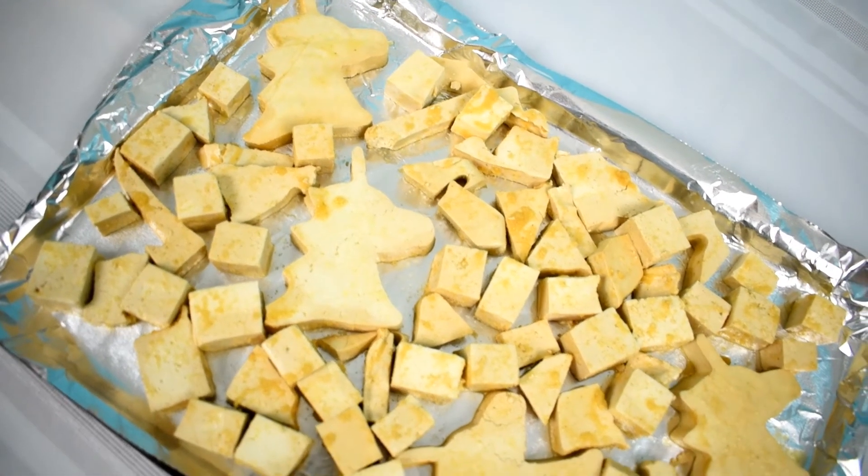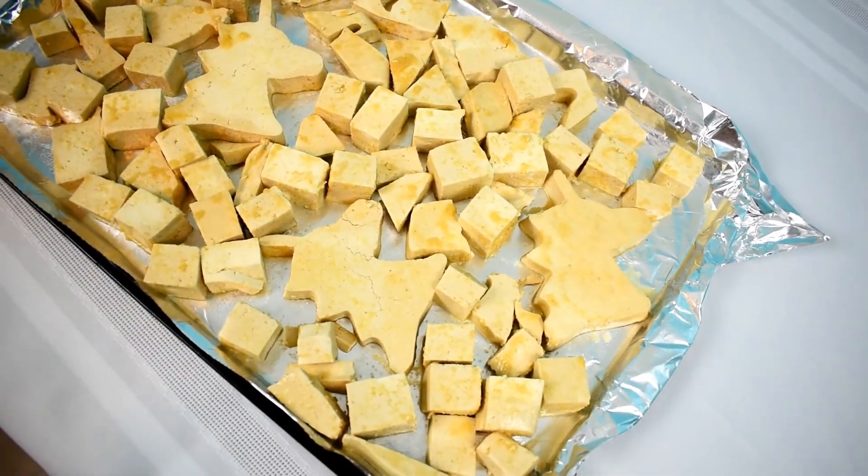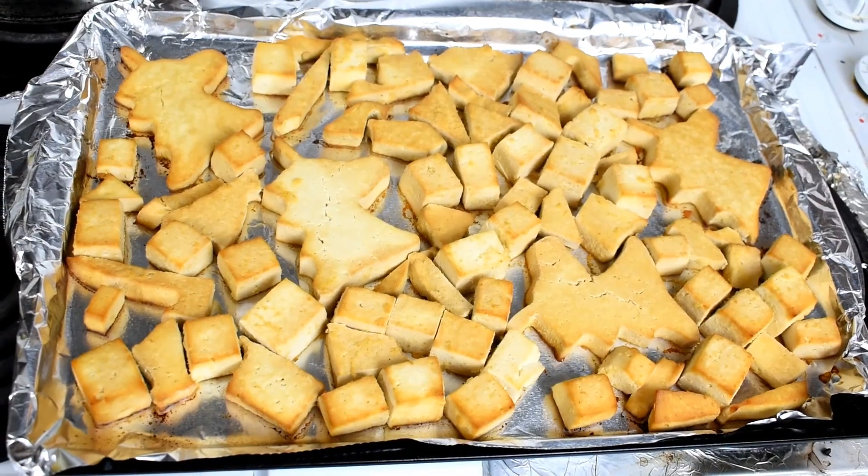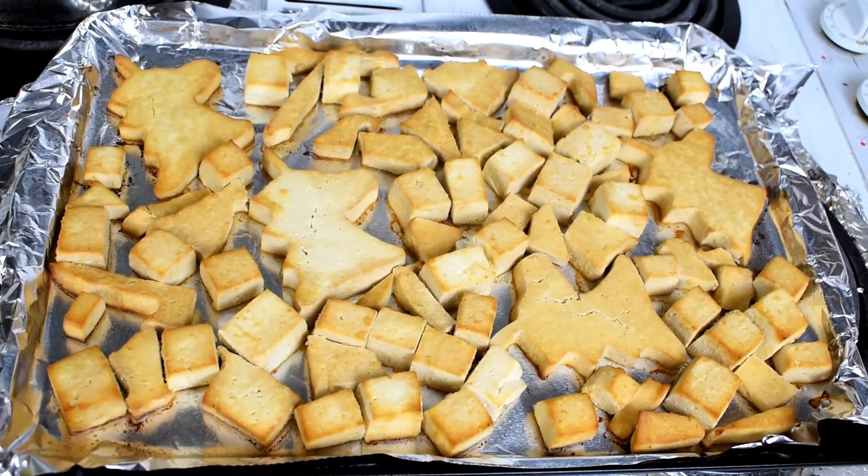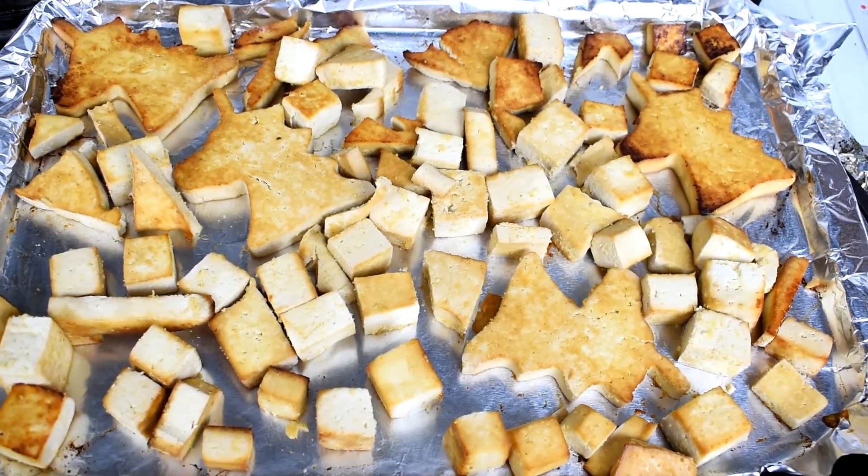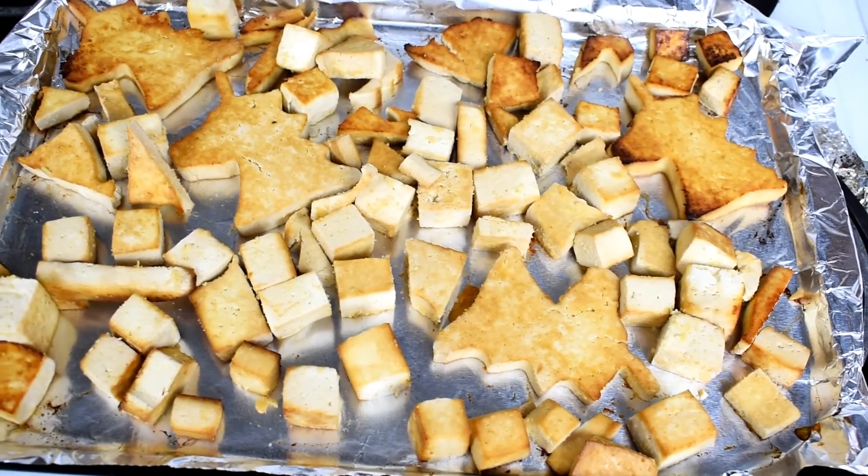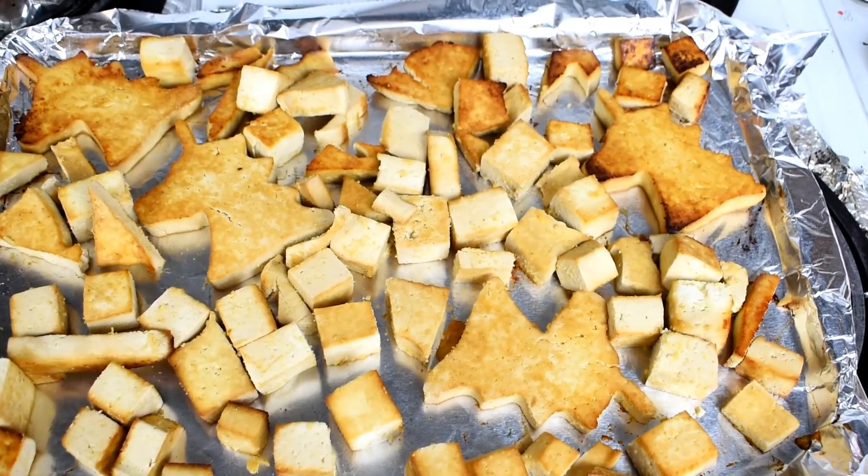You want to place your tofu in a preheated oven at 400 degrees Fahrenheit for 20 minutes. After it's been in for 20 minutes, you want to go ahead and remove it and then you're going to flip it. It's not going to all flip evenly. It's not going to be perfect. It's okay. You can even see some are on top of each other.